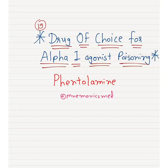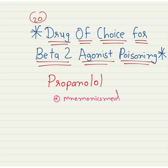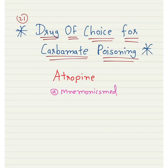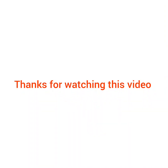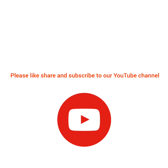Now we will learn about the drug of choice for beta-2 agonist poisoning. It is propranolol. Drug of choice for carbamide poisoning is atropine. Thanks for watching this video — please like, share, and subscribe to our YouTube channel Menomics Med.